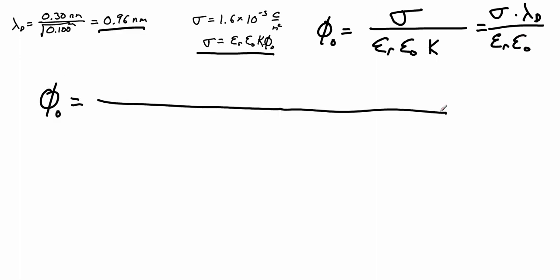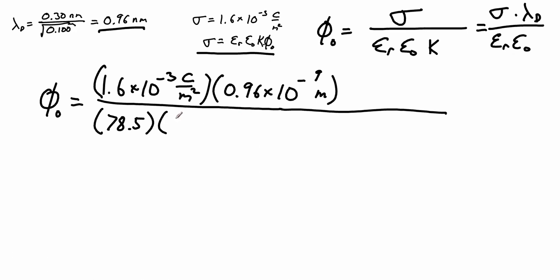Let's plug in the numbers. Our surface charge density was 1.6 times 10 to the negative 3 coulombs per meter squared. Lambda was 0.96 times 10 to the negative 9 meters. At the bottom we have the dielectric constant for water at this temperature, 78.5, and the permittivity of free space, 8.85 times 10 to the negative 12 coulombs squared per joule per meter. This comes out to 2.2 times 10 to the negative 3 volts, or 2.2 millivolts.